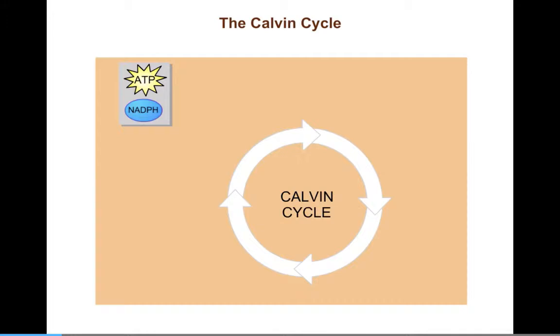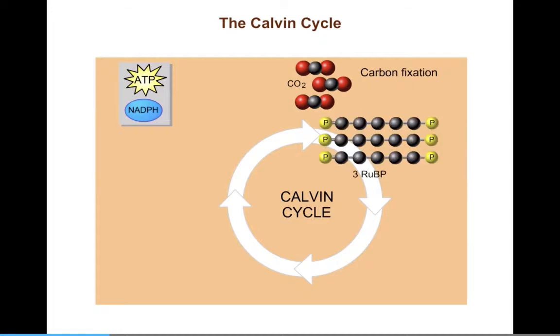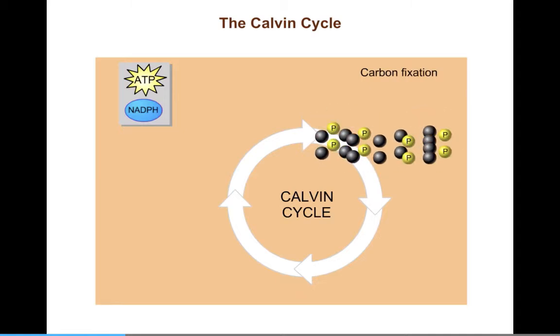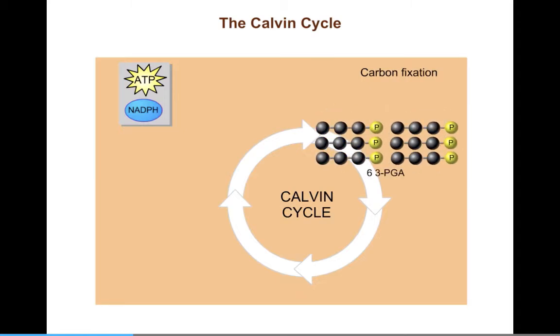The Calvin Cycle is a complex series of chemical reactions carried out in the stroma. The Calvin Cycle begins with carbon fixation. Three molecules of carbon dioxide are added to three molecules of a five-carbon sugar abbreviated RuBP. These molecules are then rearranged to form six molecules called 3PGA, which have three carbons each.